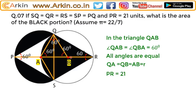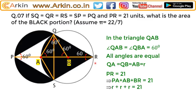All the angles are equal. This is r, this is r because it is an equilateral triangle, so this will also be r. Since PR equals 21, and PR equals PA plus AB plus BR, and PA is r, AB is r, and BR is r, we get 3r equals 21, meaning r equals 7 units. So the radius of either circle will be 7 units.